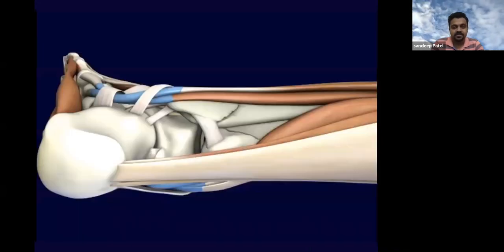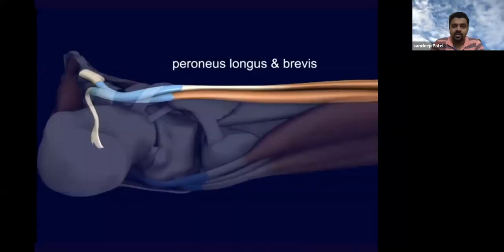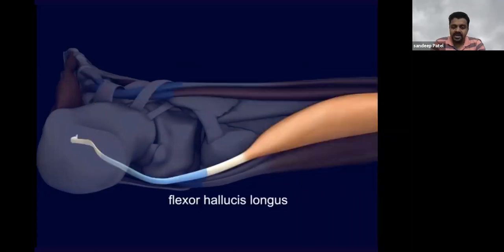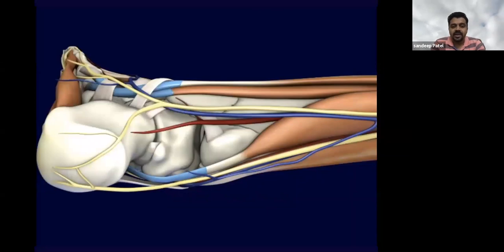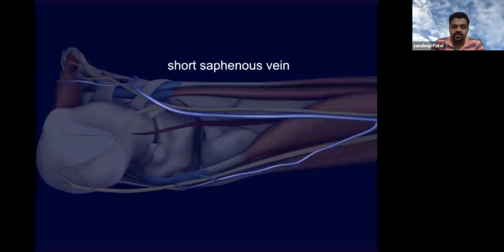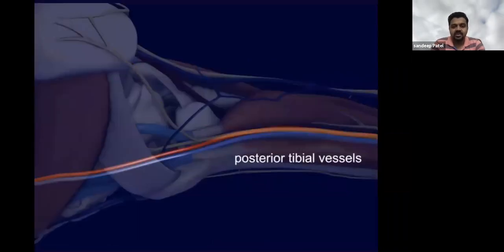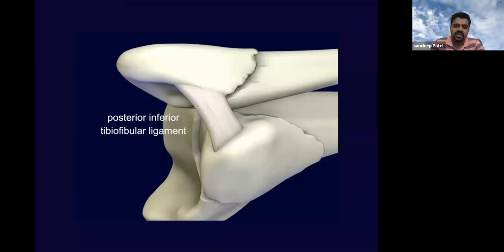A little bit of anatomy we all should know: this is an ankle view from the lateral and posterior aspect in the lateral position. We can see the tendo achilles. On the lateral side, we have the peroneus longus and brevis. Medially, we have the flexor hallucis longus. Structures at risk include the sural nerve, which is very close to the incision, the short saphenous vein, and the peroneal artery. Deeper on the medial side are the tibial nerve and posterior tibial vessels — not at risk, but be careful with retractors. The PITFL (posterior inferior tibio-fibular ligament) attaches the posterior malleolus to the fibula.